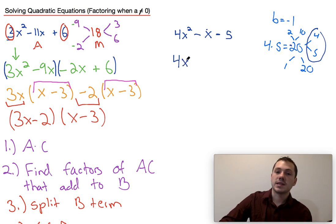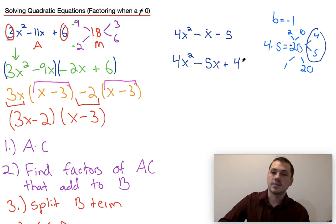So then I'm going to split this middle term up into minus 5x and plus 4x. I'm then going to put parentheses around both of these terms. Out of this first term, I can only take an x. So this becomes x. What's left is 4x minus 5. And out of this term, I can only take a 1 left with 4x minus 5.